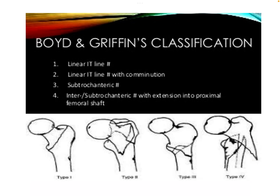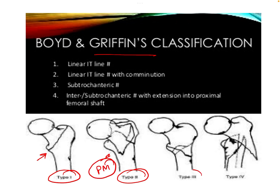To recap Boyd and Griffin: Type 1 has a simple linear fracture line along the intertrochanteric line. Type 2 has a linear line along the intertrochanteric line with a posterior-medial combination. Type 3 are the reverse oblique — this fracture line is different from the oblique fracture line usually seen in intertrochanteric fractures. Type 4 is an intertrochanteric fracture with subtrochanteric extension, where fracture fragments are in two different planes.